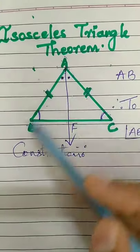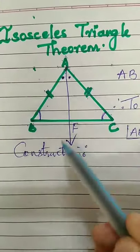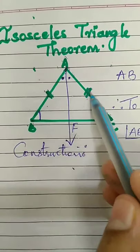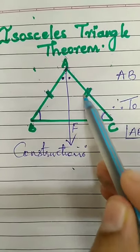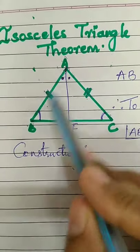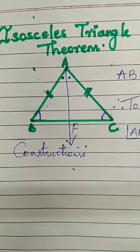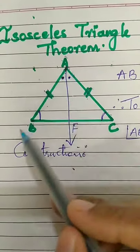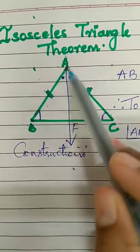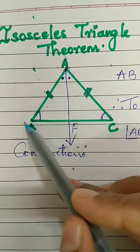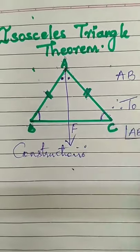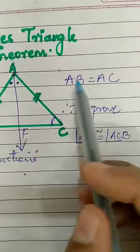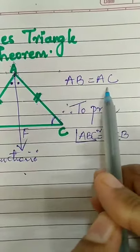In an isosceles triangle — isosceles triangle means if two sides of a triangle are congruent — that triangle is called an isosceles triangle. This is an isosceles triangle where side AB is congruent to side AC. So I have written that AB congruent to AC.